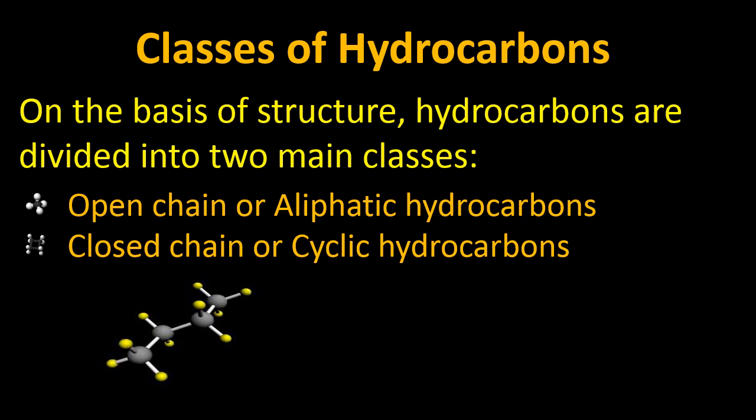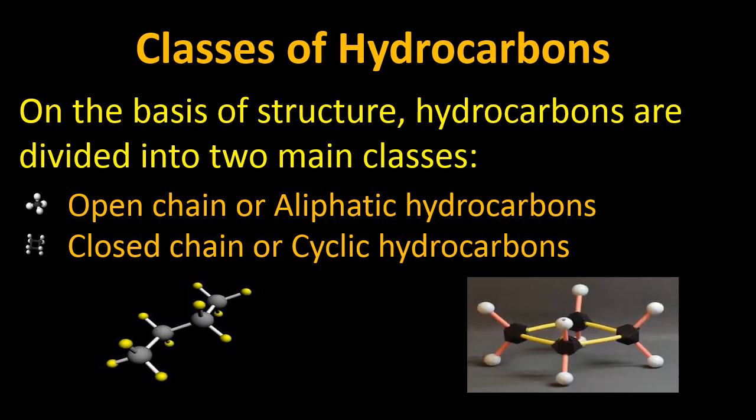Open chain hydrocarbons are those chains in which the last carbons are free — they are not joined with each other. For example, taking four carbon atoms, it will be named as butane. The gray balls represent carbon and the yellow small balls represent hydrogen. In closed chain or cyclic hydrocarbons, the four carbon atoms are joined at the end — carbon number one is joined with carbon number four.